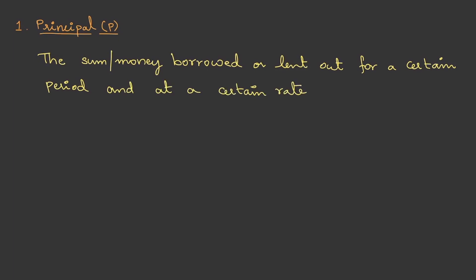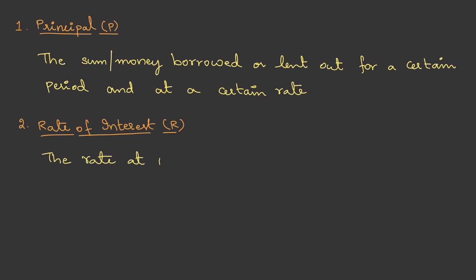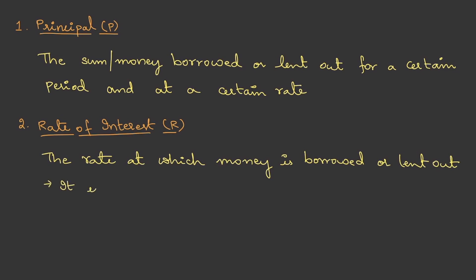The second term is Rate of Interest (R). It is the rate at which money is borrowed or lent out, and it is always expressed in percentage. The third quantity is Time — it is the period for which the money is borrowed or lent out.